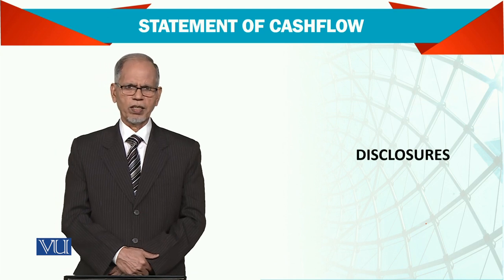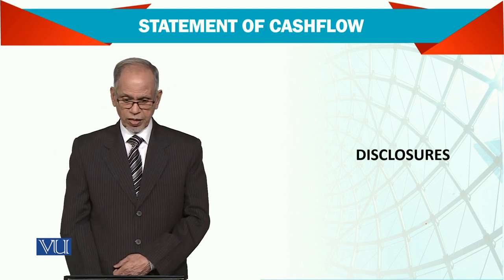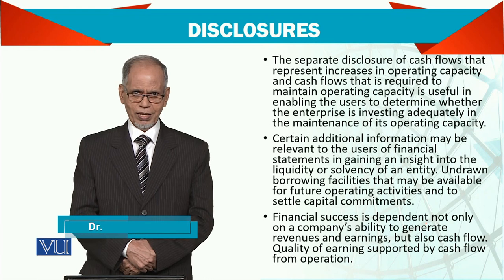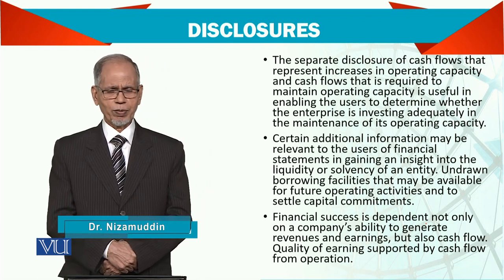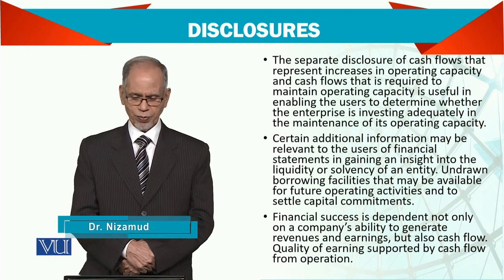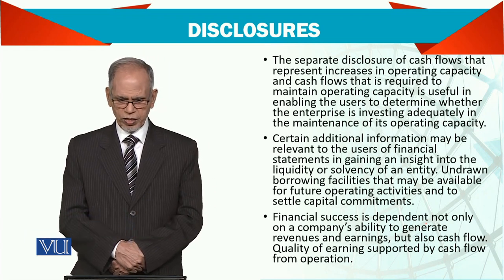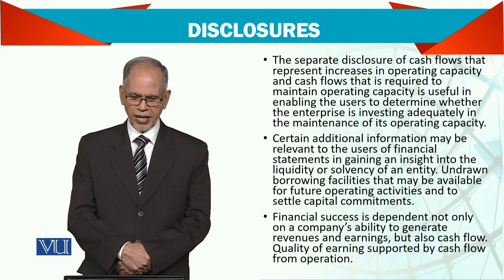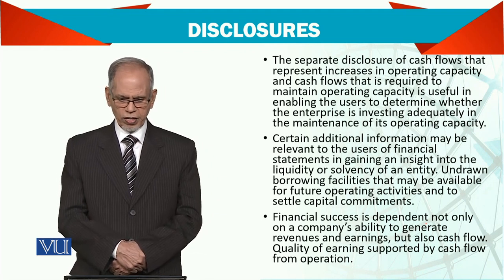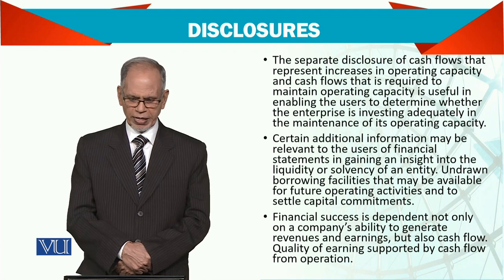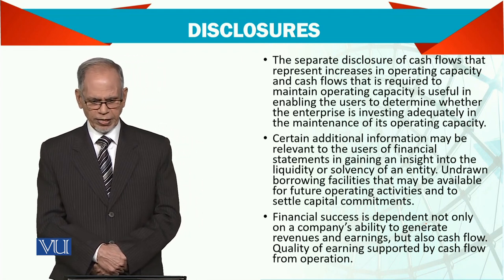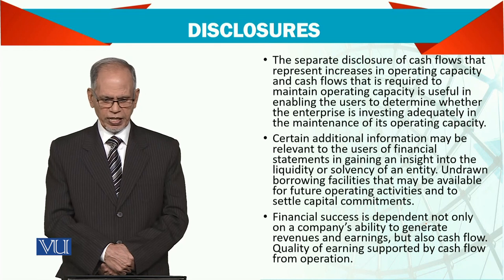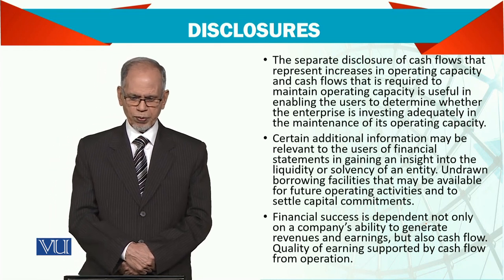Let us see the disclosure requirement of IAS 7 — what we are supposed to disclose in these statements. Sometimes we have to give the details in the statement itself and sometimes we give in the notes to the account. The separate disclosure of cash flow statement represents the increase in operating capacity, and cash flow required to maintain operating capacity is useful in enabling the user to determine whether the enterprise is investing adequately in the maintenance of its operating capacity.